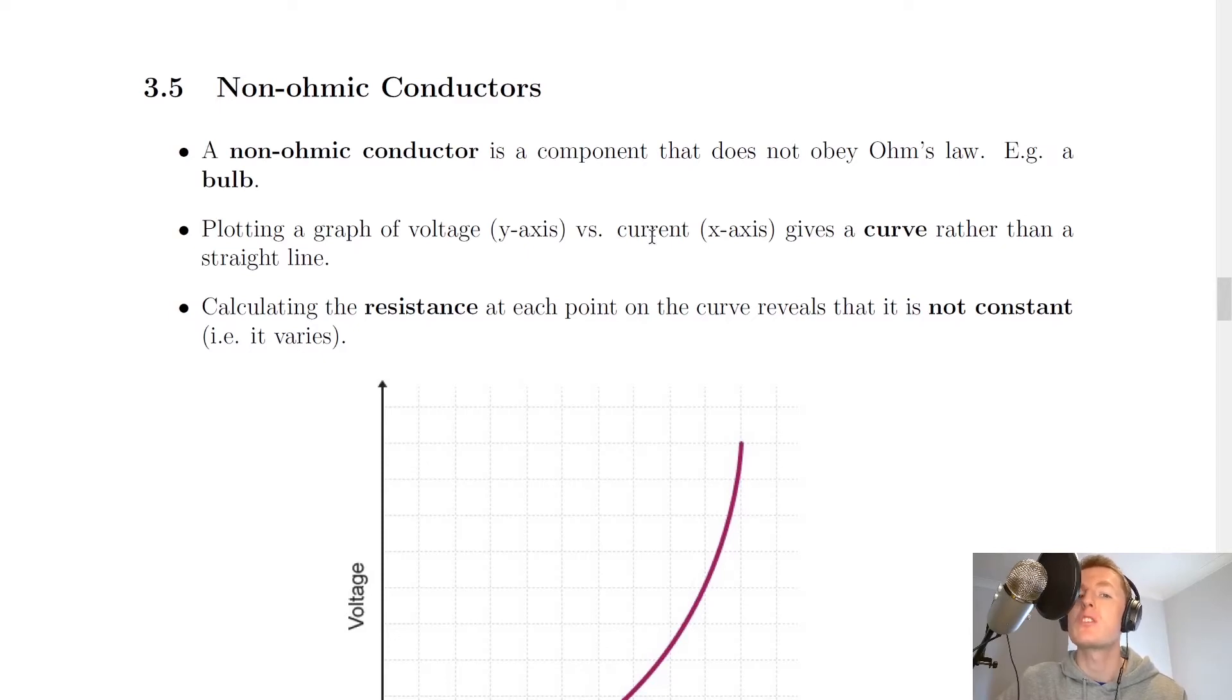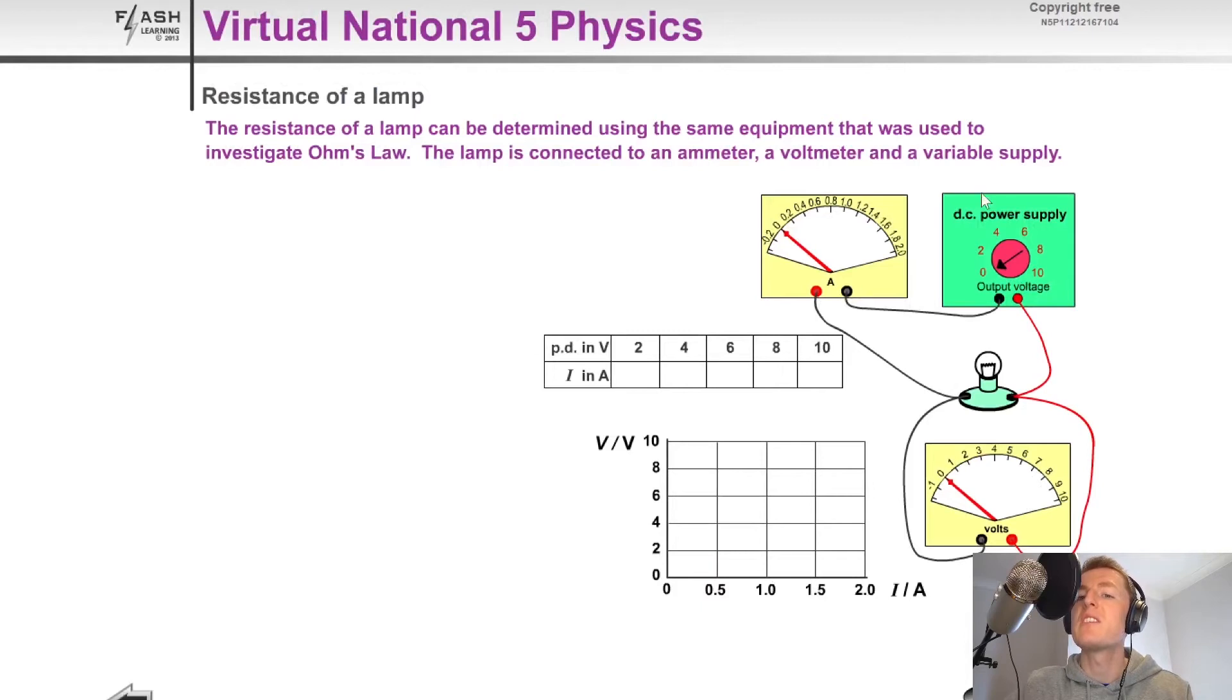Just to show you what would happen if you took some results from an experiment on a non-ohmic conductor, you'll see here that we have a DC power supply connected in series with a bulb and an ammeter, and then we have a voltmeter across the bulb. So that means we can measure the current passing through the bulb and the voltage across the bulb.